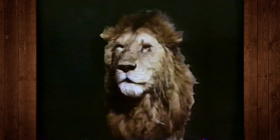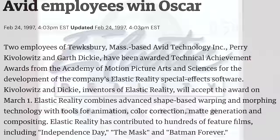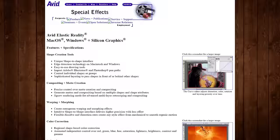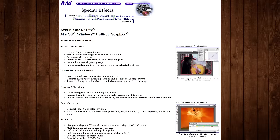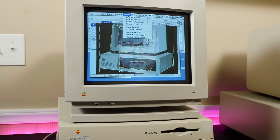The uses for Elastic Reality didn't stop with Animorphs either. Throughout the 90s it was the de facto standard in image and video morphing, being utilized in hundreds of TV shows and movies, from Star Trek Deep Space Nine to The Mask to Batman Forever. Two of the engineers behind Elastic Reality even won an Oscar at the 69th Academy Awards for their contributions to its development, with credit going to Avid Technology who bought out Elastic Reality in 1995. Oddly enough, the program was discontinued as a standalone product in 1997, despite the Oscars and widespread usage in Hollywood. The tech remained in use regardless, being rolled into products from Avid and Soft Image.